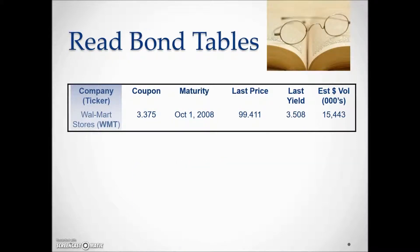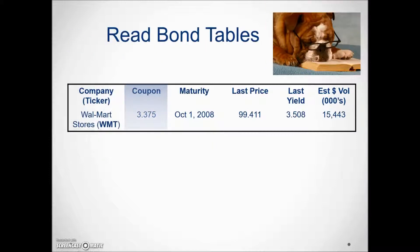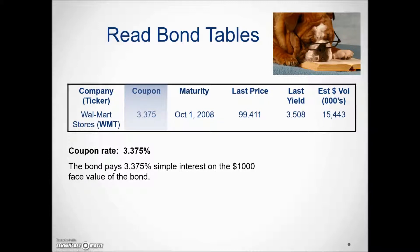Here we have a bond table. The first column shows the ticker symbol — in this case it's Walmart, ticker symbol WMT. The next column shows the coupon rate, which is the annual interest rate per bond expressed as a percentage. It's 3.375% of the typical bond value of $1,000. To determine the annual interest amount, we take $1,000 times this percentage.